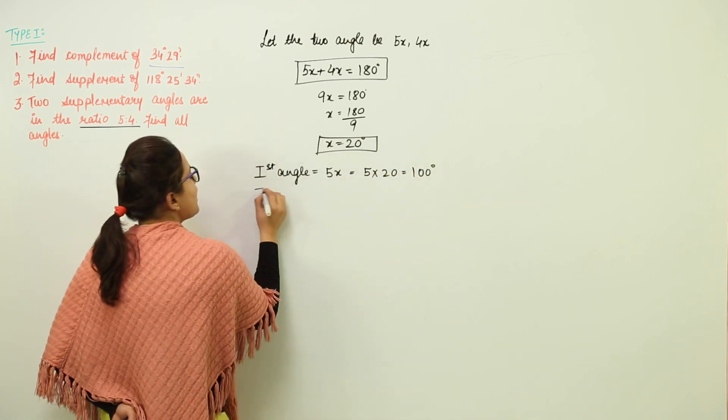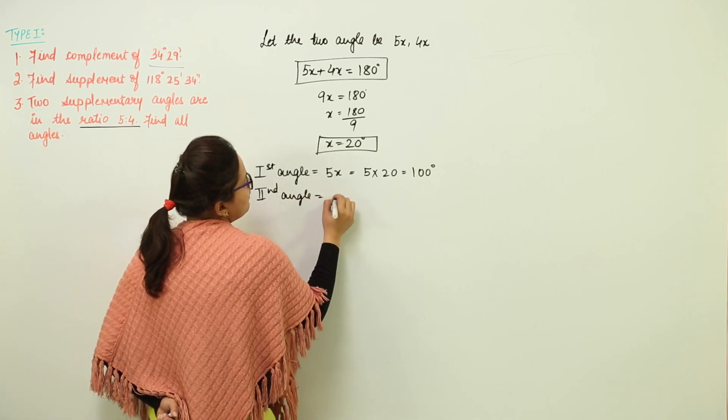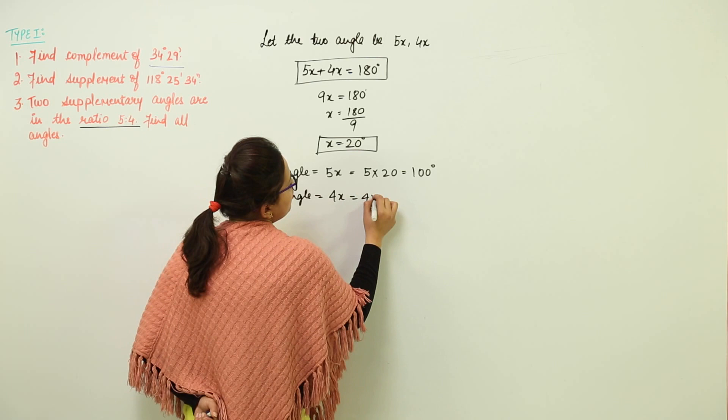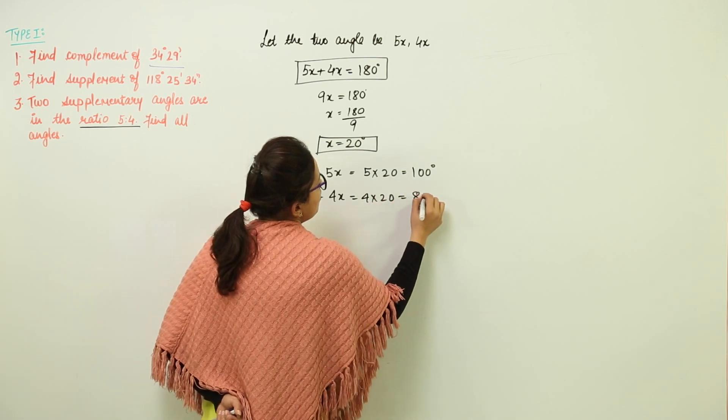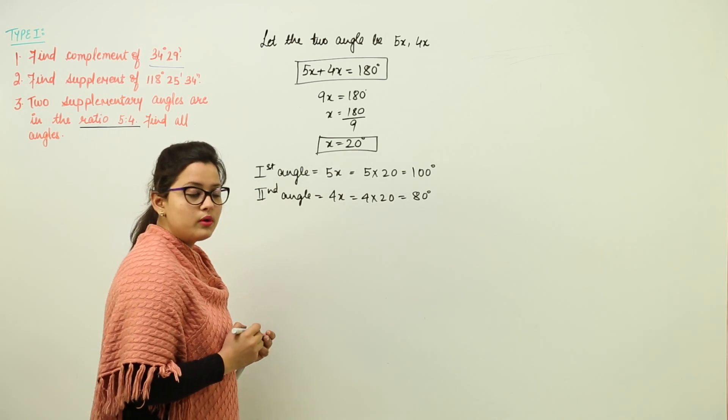And the second angle, on the other hand, is going to have the value of 4x, that is 4 into 20, giving you 80 degrees.